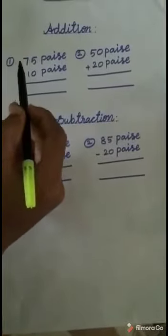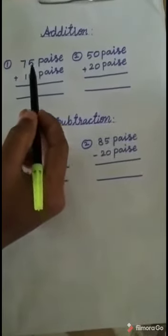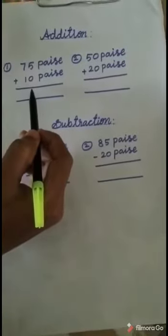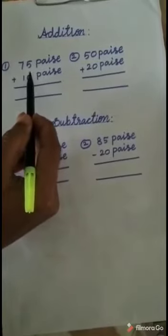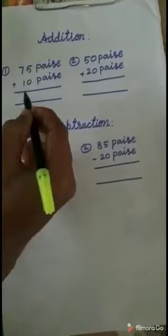See the first example: 75 paisa plus 10 paisa. Here, see the one's place, 5 plus 0 equals 5. If we add any number with 0, we get the same answer. So 5 plus 0 equals 5.